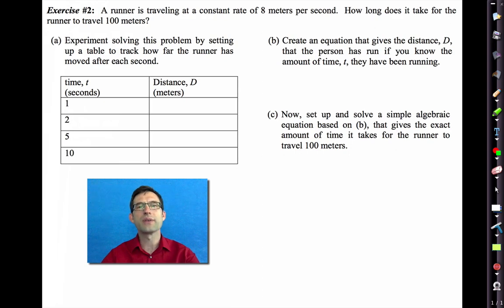So now let's try to extend that idea of rate and try to work a little bit where we know that somebody is traveling at a constant rate. Let's take a look at exercise two. A runner is traveling at a constant rate of eight meters per second. Make sure you really understand that. That means after one second, the runner has traveled eight meters, and then after another second, another eight meters, after another second, another eight meters, et cetera. We're trying to answer the question, how long does it take for the runner to travel 100 meters?